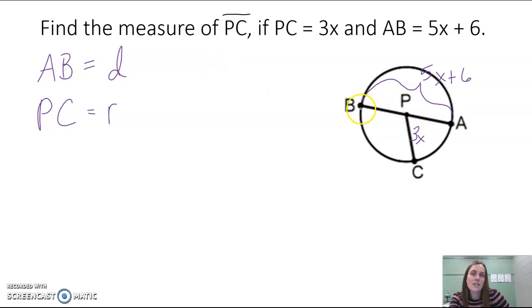AB is a diameter because it goes through the center of the circle, P, and it's from one endpoint to another endpoint on the circle. It's a chord. It's a chord that goes through the center.